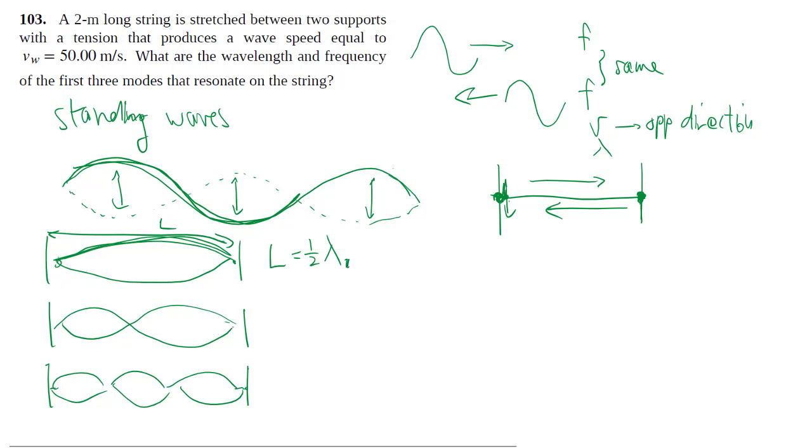Then the next one, you have pattern number two, which has the length equal to the wavelength because you have two humps. And then now you have three halves of a wavelength. So using that, you can solve for the actual lambda. If the length here is two meters, then this would be four meters, two meters, and one point three three repeating meters.